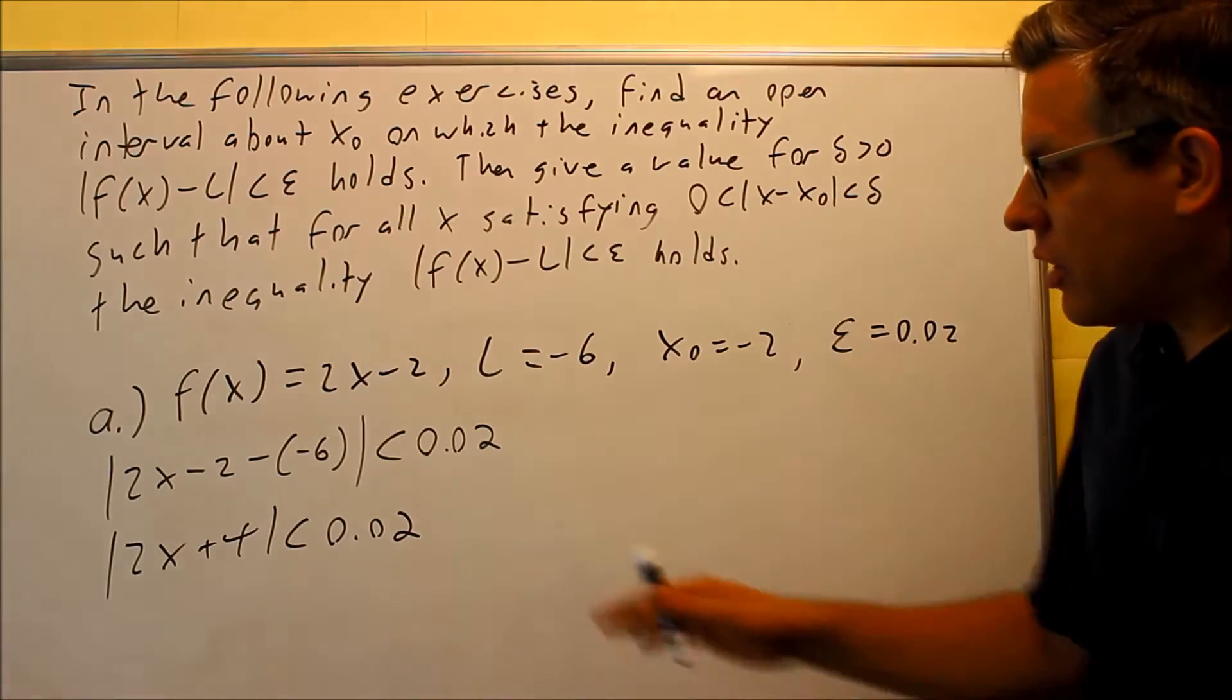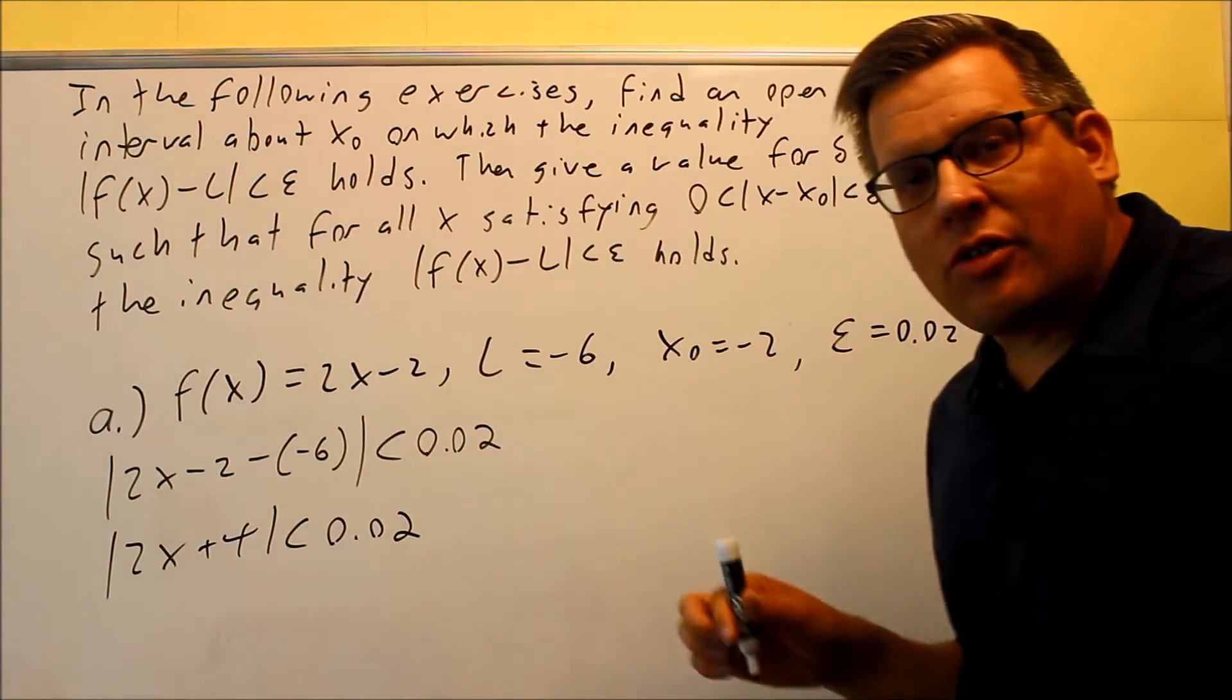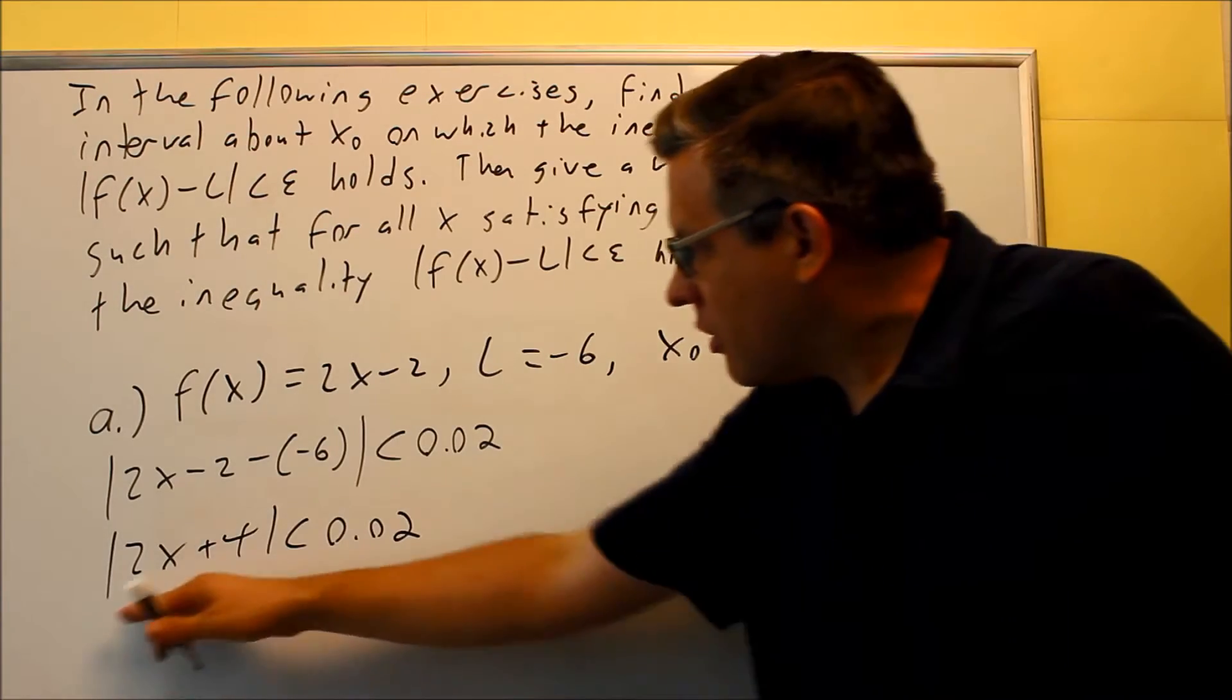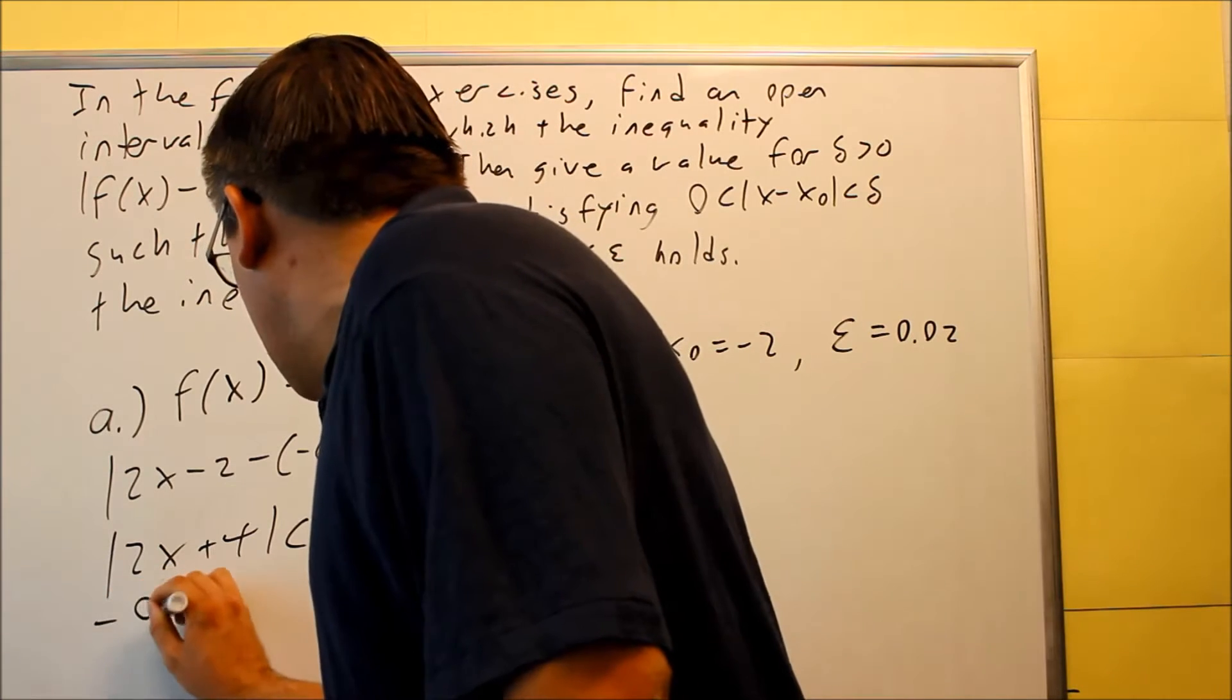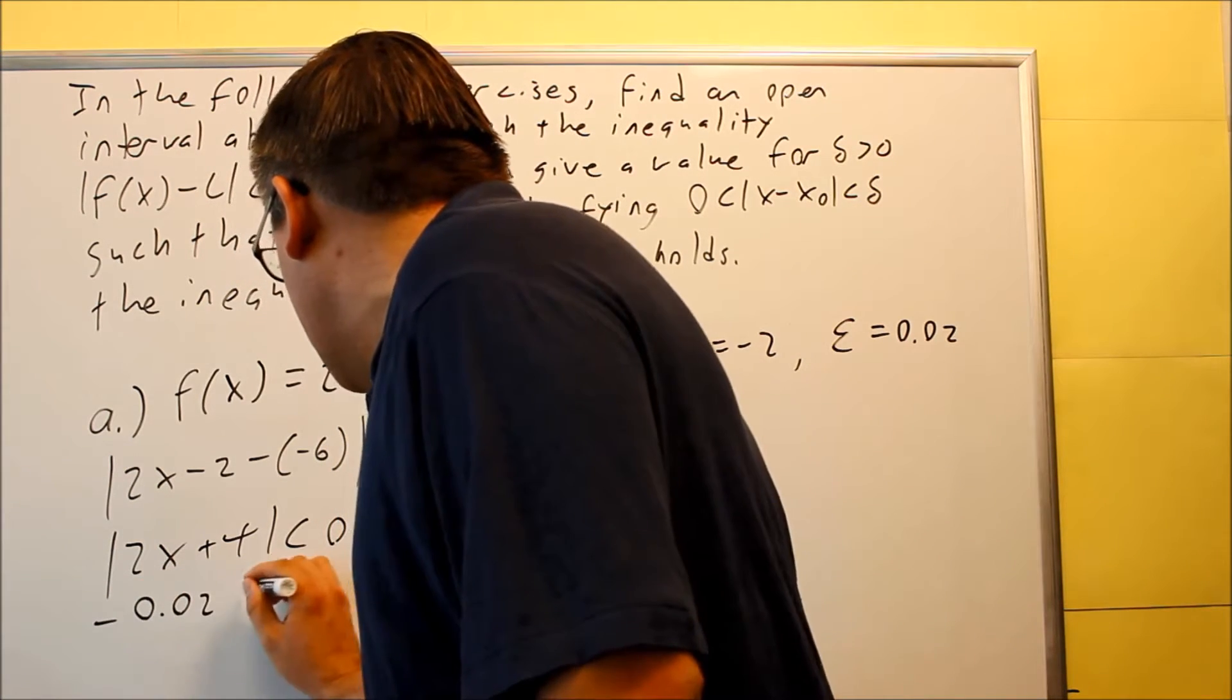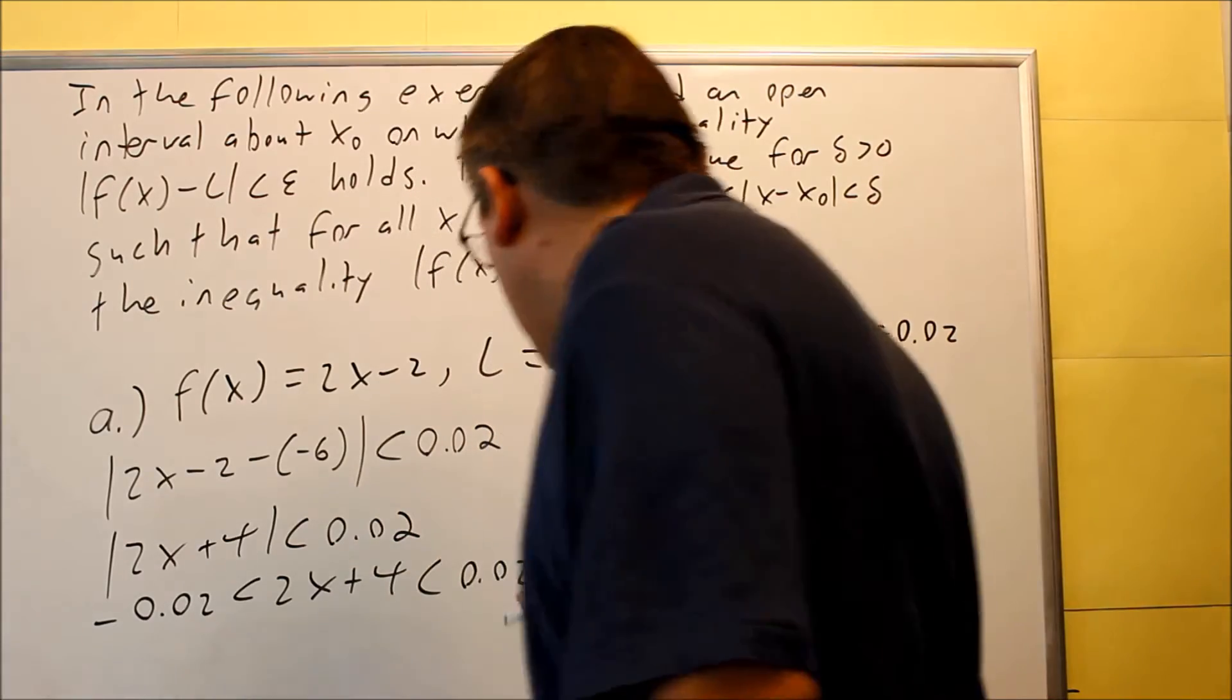We need to get rid of the absolute value, so we have to change the absolute value into an inequality. We've done a similar technique before in some of our other problems. So to do that, you're going to make this negative 0.02 less than 2x plus 4 less than 0.02.